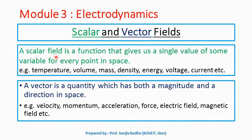Scalar field is a function of space whose value at each point is a scalar quantity, means it will have only magnitude. A scalar field is a function that gives us a single value of some variable for every point in space. Some examples of scalar field are temperature, volume, mass, density, energy, voltage, current, etc. In simple words, scalar fields take a point in space and return a number.